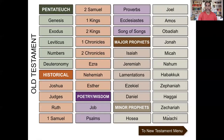Today we're covering the Minor Prophets. The Pentateuch consists of five books, the historical books are 12, poetry and wisdom are five, the major prophets — which we covered last week — was five, and the Minor Prophets is 12.